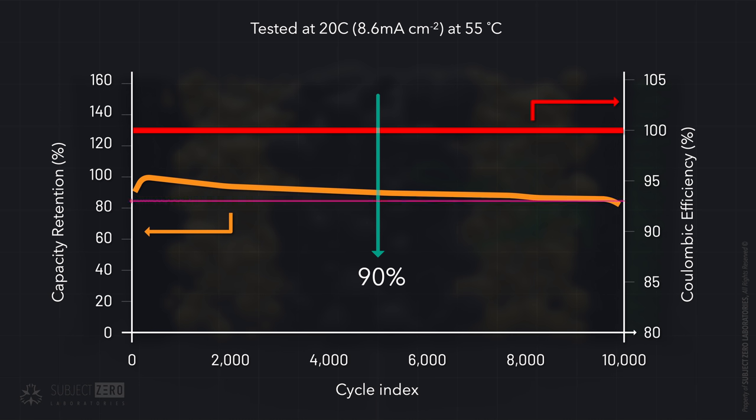Reaching 82% capacity retention after 10,000 cycles in a 20C-rate, without any detriment to the overall battery. The reason they test in high C-rates is because dendrites are known to form more easily.